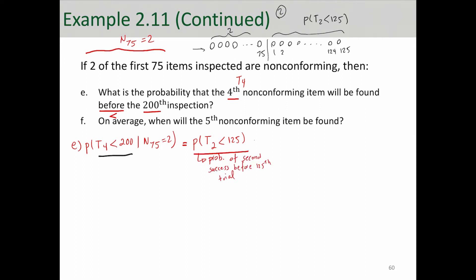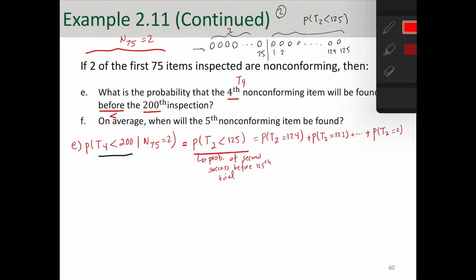Now, to calculate this probability, you have to add up a lot of probability. Probability of T2 equals 124, probability of T2 equals 123, plus all the way to probability of T2 equals 2. Well, there's actually a smarter way to calculate this probability.